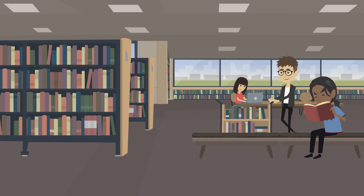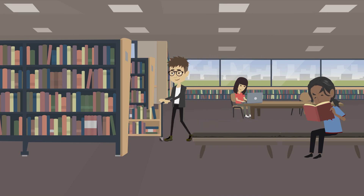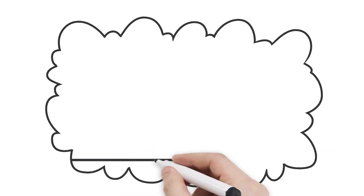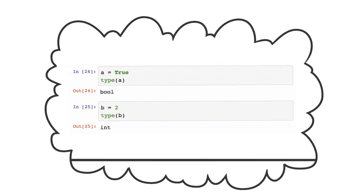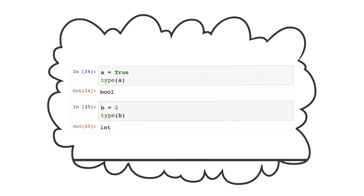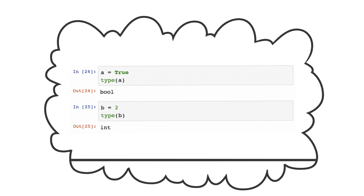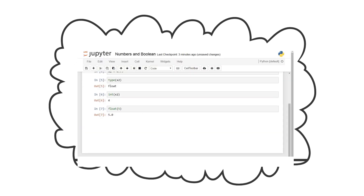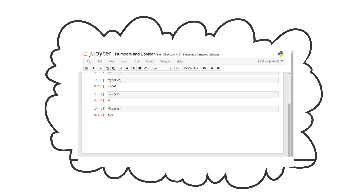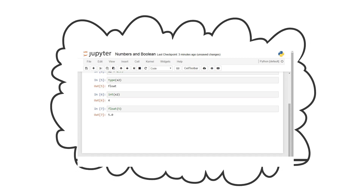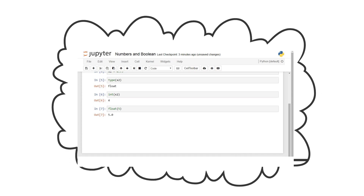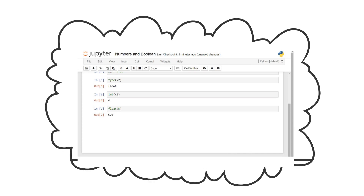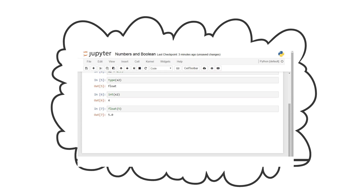Python's standard library of modules is available as soon as you install the program. Remember the built-in function type we used earlier in this course? We used it directly without having to write code manually to find the type of input assigned to any variable. Similarly, we used the int or float functions to convert input into a different type. These functions were part of the standard library installed with Python.